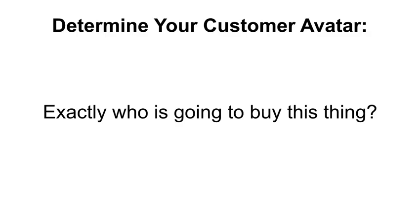Let's start with question number one and build out the avatar. So exactly who is going to be buying this thing? First, let's get clear about what we're actually selling. Yes, we have a high-tech system for growing herbs and vegetables indoors automatically and at a lower price than the grocery store. That's what it is and what it does — but that's not what people are buying.